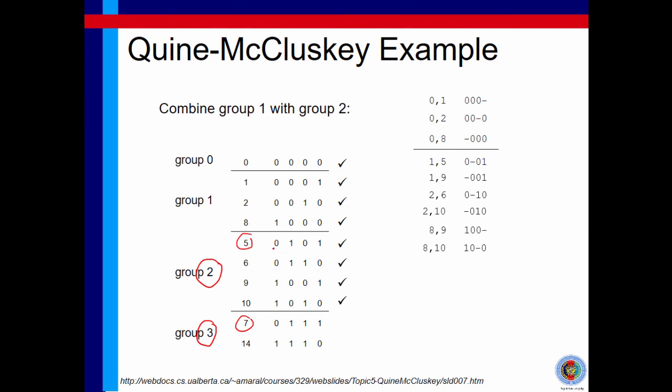Variable A, 0 to 0, it stays. Variable B, 1 to 1, it stays. Variable C changes from 0 to 1. Variable D, 1 to 1. So, these two minterm of 5 and 7 can be combined.